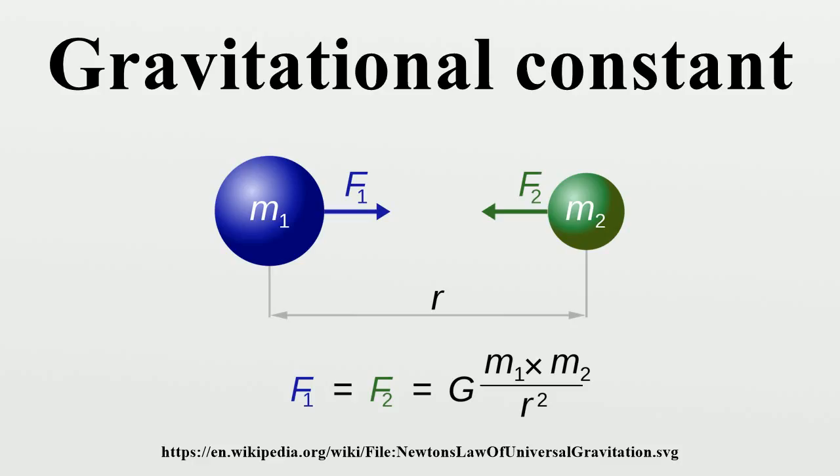According to the Law of Universal Gravitation, the attractive force between two bodies is directly proportional to the product of their masses and inversely proportional to the square of the distance, r, between them. The constant of proportionality, G, is the gravitational constant.